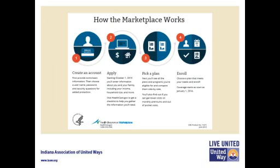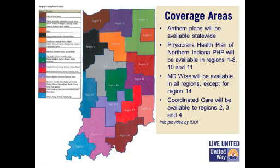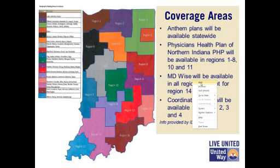How does the marketplace work? A person can create an account online at healthcare.gov or through the National Call Center, then apply, check out the different plans, pick a plan, and enroll. The plan does not become effective until they make their first payment. This map illustrates the coverage areas of the four plans currently operating in the marketplace. Anthem and MedWise plans are available throughout most of the state. PHP is primarily in northern Indiana and a couple of other regions, and Coordinated Care is in northeastern Indiana. This information is updated periodically through the Department of Insurance.